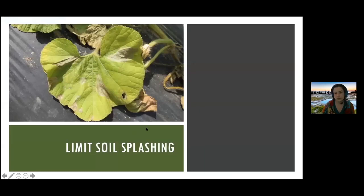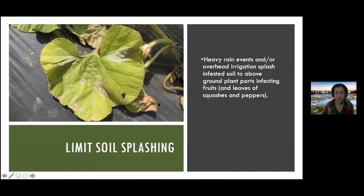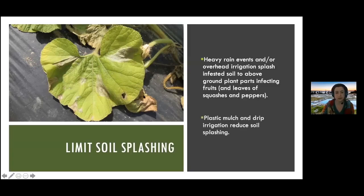Finding ways to limit soil splashing also really helps — having raised beds and plastic mulch is a good idea to protect from splashing. In the watermelon situation, your fruit sits between the rows. Some growers I've worked with train their vines as plants grow to try to have the fruit sit on the plastic mulch, because then your sprays are much more effective by eliminating constant contact with soil. And avoid overhead irrigation when you already have this pathogen in the field.